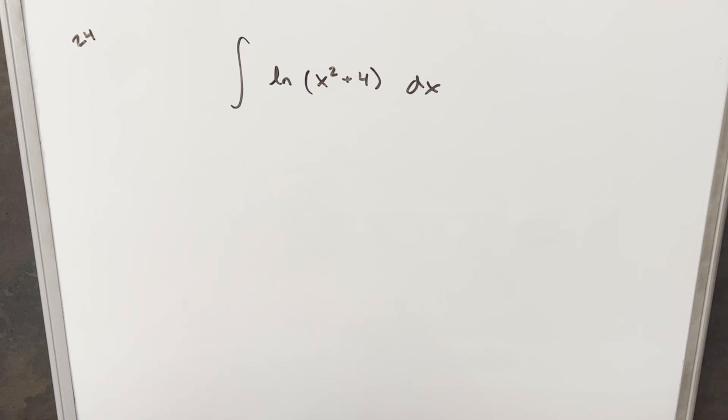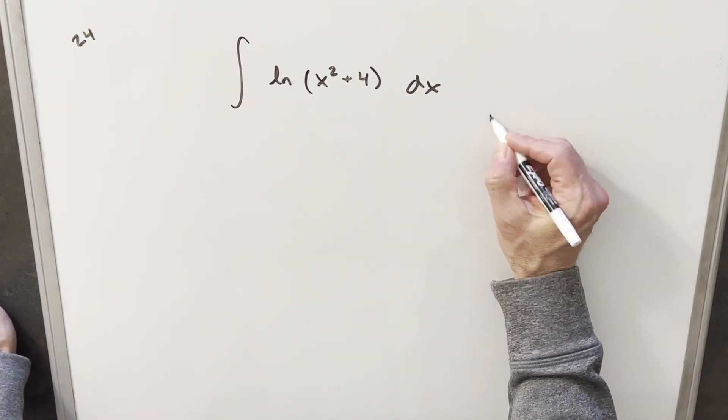It seems like I've run into quite a few problems with natural log recently, and for each one, the best way to approach it is usually integration by parts. So I'll just get started with this.